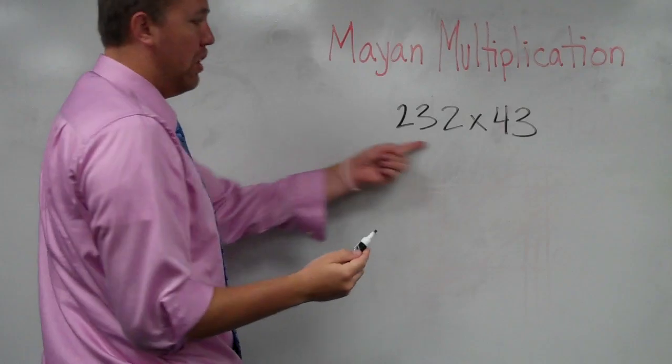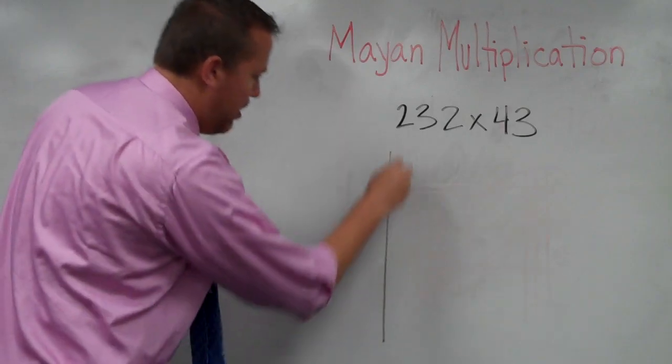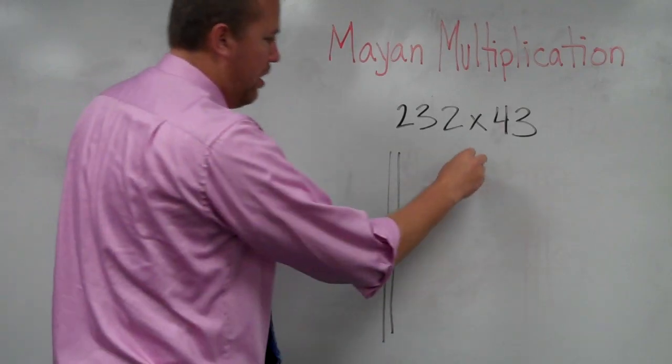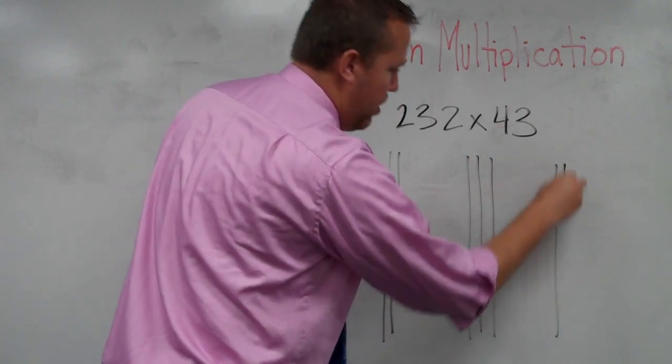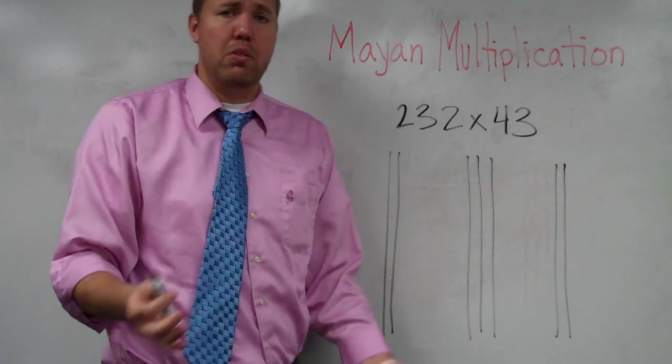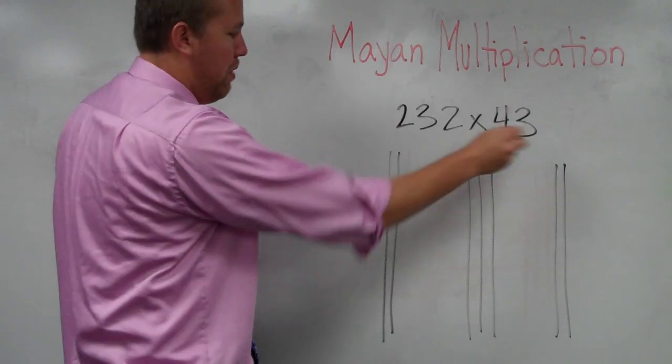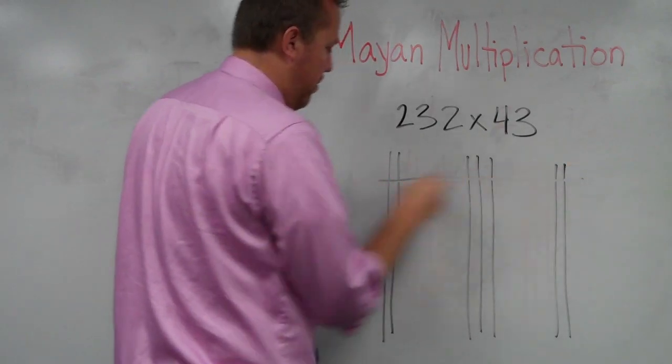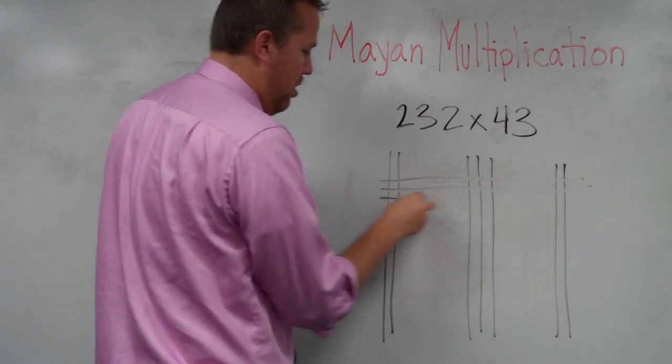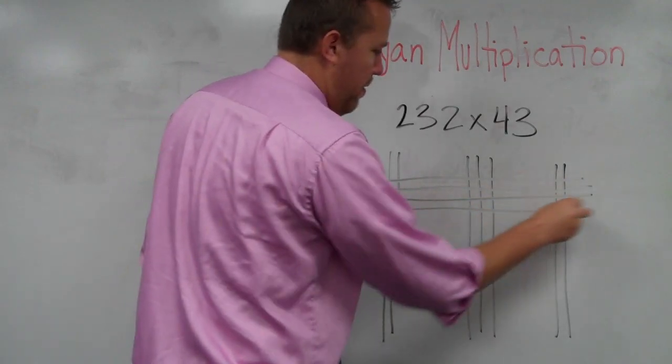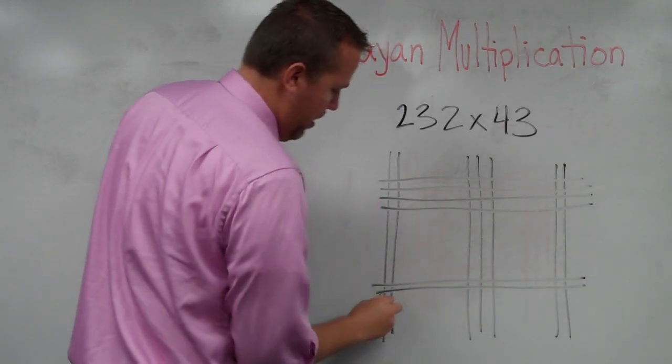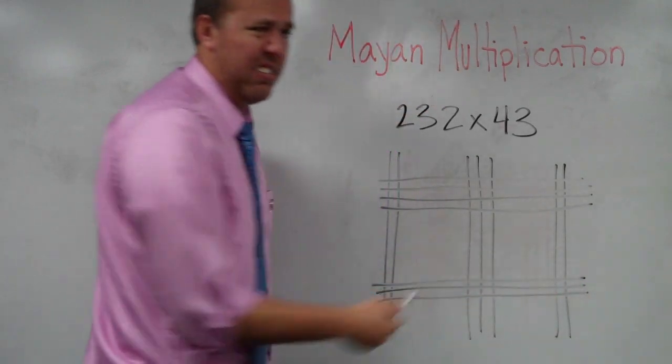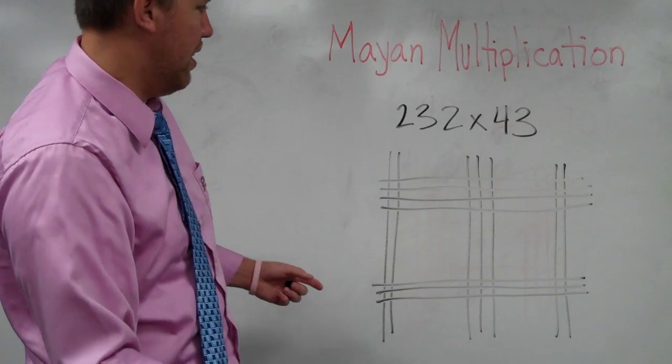Okay. So 232. Two lines, 230 and 2. I like to separate them just so that I don't get mixed up. Times 43. 40 and 3. Make sure the lines don't crisscross anywhere. That would make it difficult.